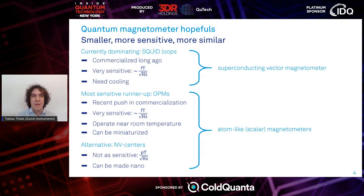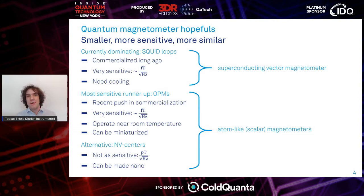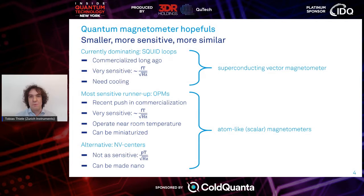NV centers and OPMs are forming better and better alternatives to the long-dominating SQUIDs, which have been around for quite some time already, but which face a major limitation: they need to be cooled to cryogenic temperatures. This can be done, but it is challenging and does limit the effective sensitivity. OPMs have recently experienced another push in terms of commercialization, especially because sensitivities in the SERF regime are now really matching the ones from SQUID loops. NV centers are not as sensitive yet, but have clear advantages in the nanosensing domain.